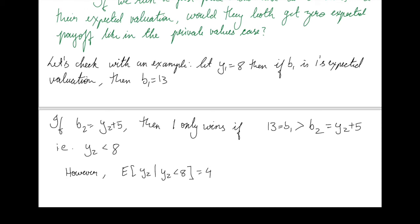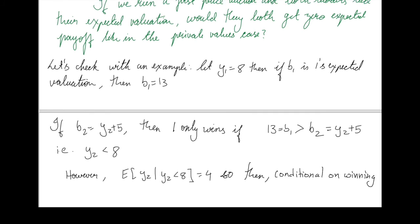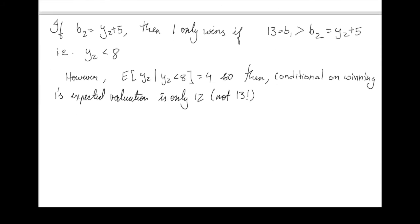Remember that this says that all the values between 0 and 8 are equally likely, which means that the expected value is the midpoint of 0 and 8, which is 4. So if the expected value of Y2 is 4, then conditional on winning, 1's expected value is not 13, but actually 12. The fact that player 1 has to decrease his estimate of what the good is worth, conditional on winning, is what we call the winner's curse.